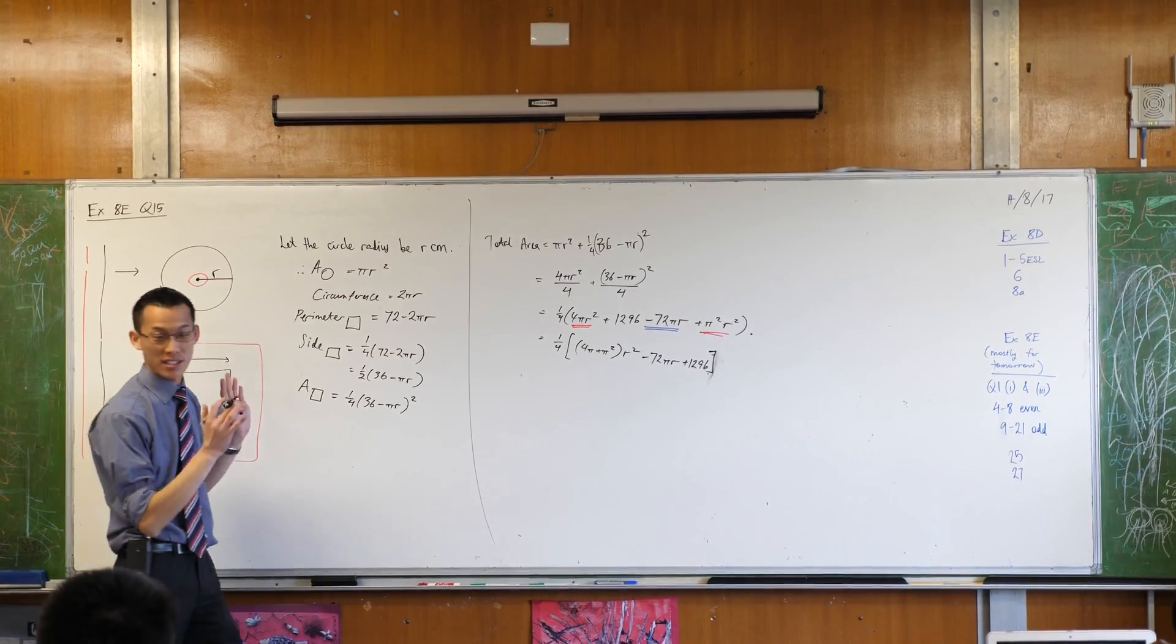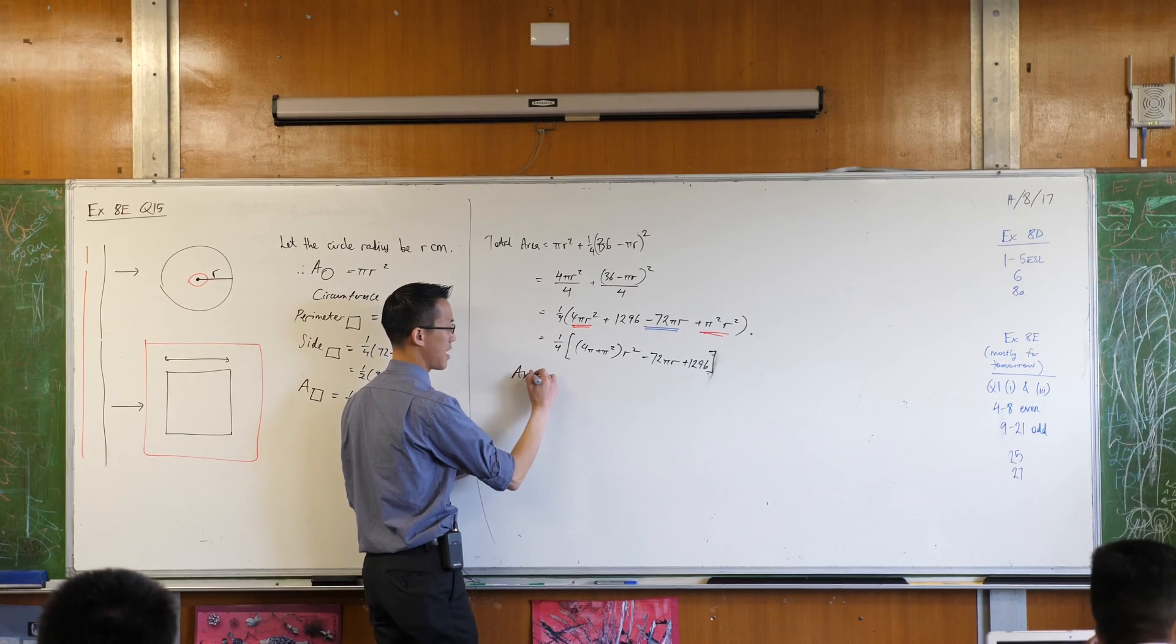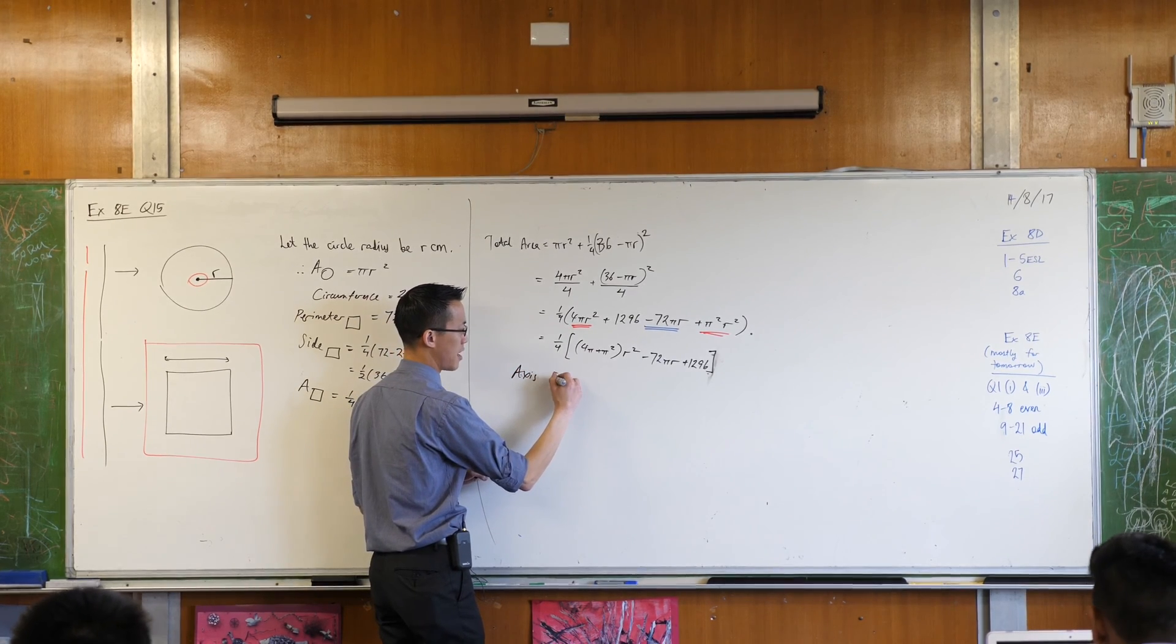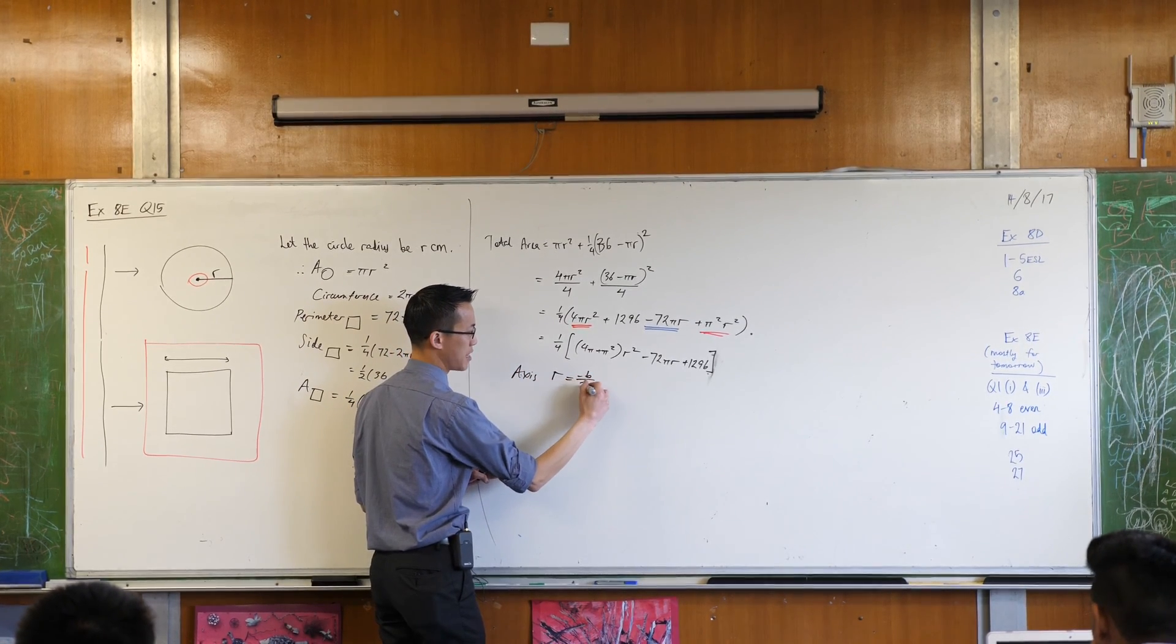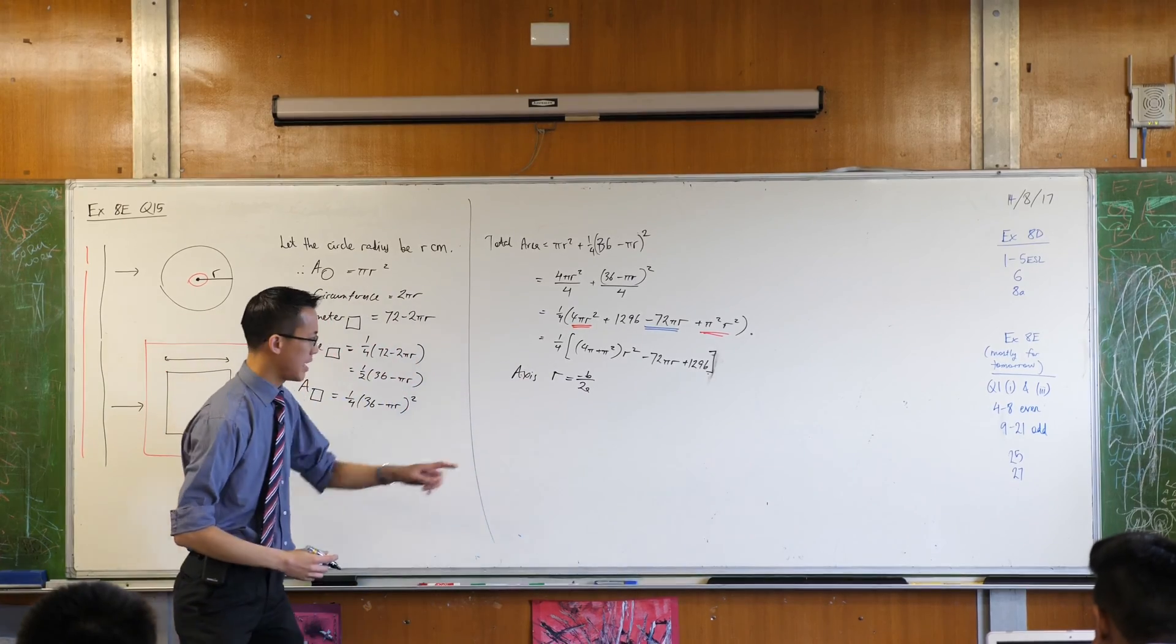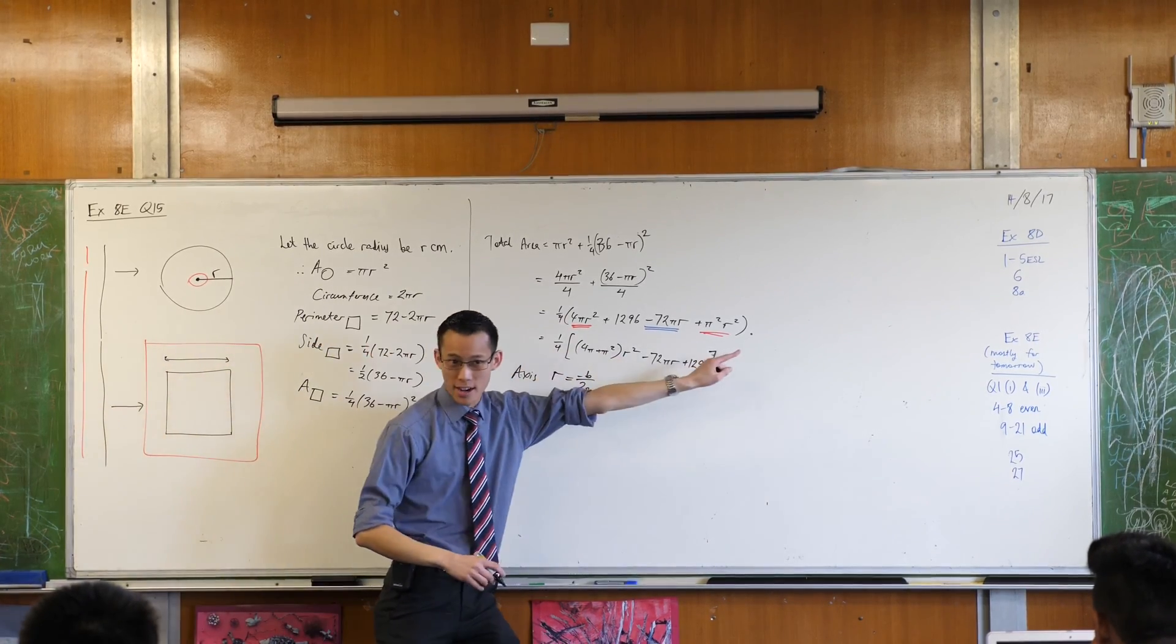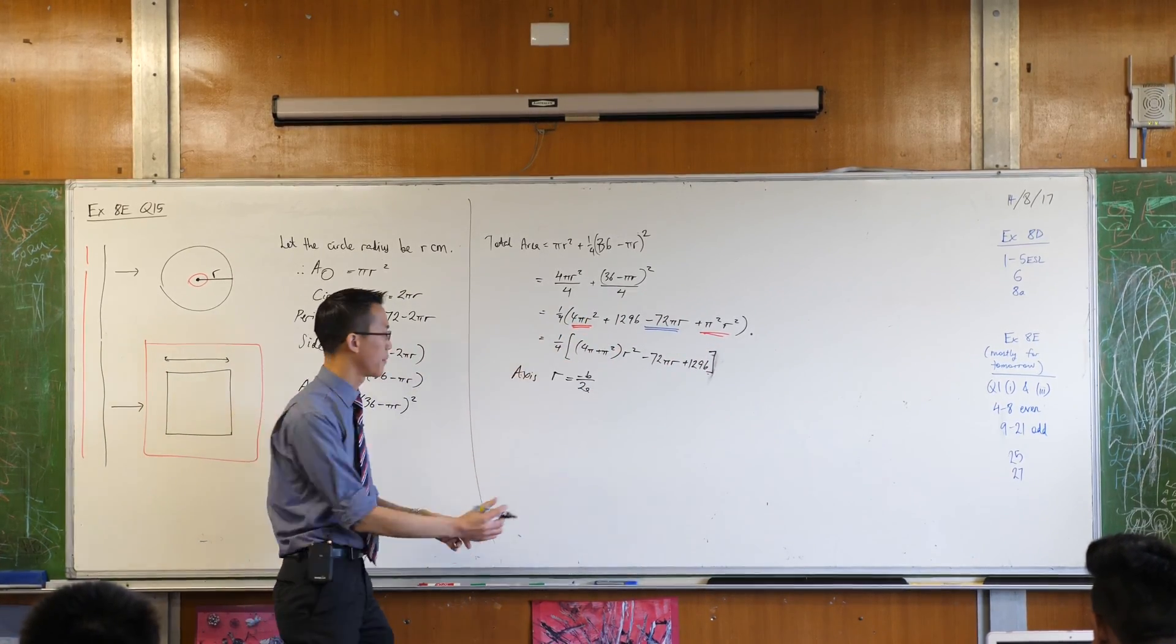They're messy numbers but they're just numbers, so from here I can say the axis r is equal to minus b on 2a. It's r because this is a quadratic in r, it's not a quadratic in x or anything like that.